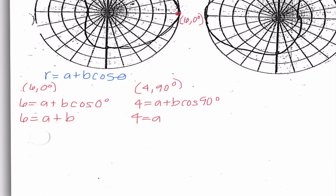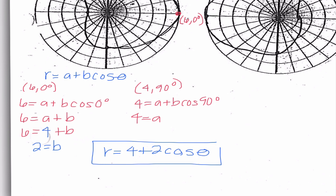Right away we've already solved for one of these values. To find the other value, I can use substitution. I substitute 4 in for a: 6 equals 4 plus b. When I subtract 4 from both sides, I get 2 equals b. So I have r equals 4 plus 2 cosine θ. We already said this graph was dimpled, and in a dimpled graph the absolute value of a is bigger than the absolute value of b, so this equation makes sense.